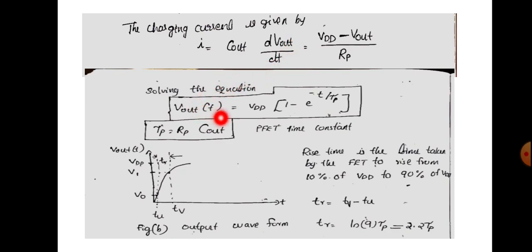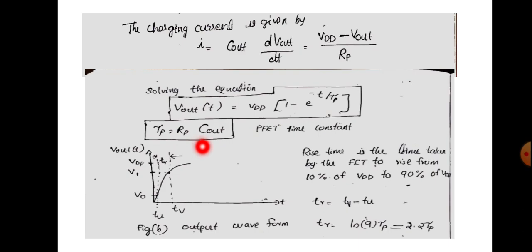Solving the equation, we get V_out(T) equal to VDD into (1 minus e raised to minus T by tau_P), where tau_P is equal to R_P into C_out. This corresponds to the rise time, compared to tau_N equal to R_N into C_out for fall time.